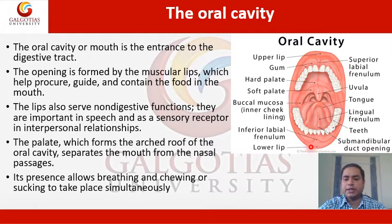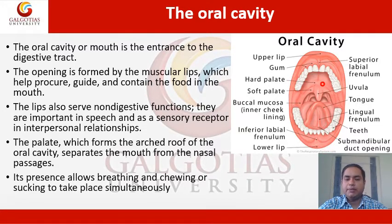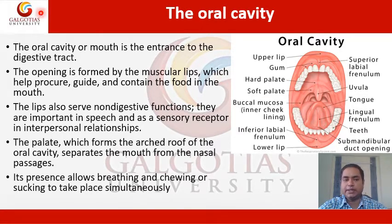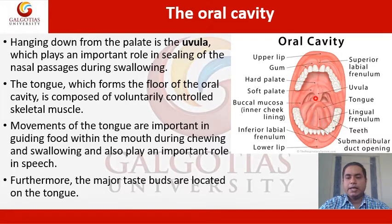Lips also serve non-digestive functions, like speech organization, and they have sensory receptors that help in making interpersonal relationships, like kissing. The palate, which forms the arched roof of the oral cavity, separates the mouth from the nasal cavity, allowing breathing and chewing or sucking to take place simultaneously. The uvula is hanging down from the soft palate.